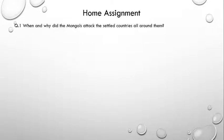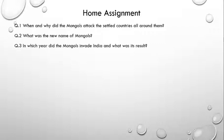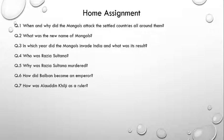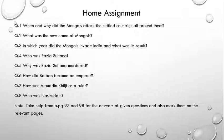Home Assignment. You have to find the answers to the following questions. Number 1: when and why did the Mongols attack the settled countries all around them? Number 2: what was the new name of the Mongols? Number 3: in which year did the Mongols invade India and what was its result? Number 4: who was Razia Sultana? Number 5: why was Razia Sultana murdered? Number 6: how did Balban become an emperor? Number 7: how was Alauddin Khilji as a ruler? Number 8: who was Nasiruddin? Take help from book pages 97 and 98 for the answers and also mark them on the relevant pages.